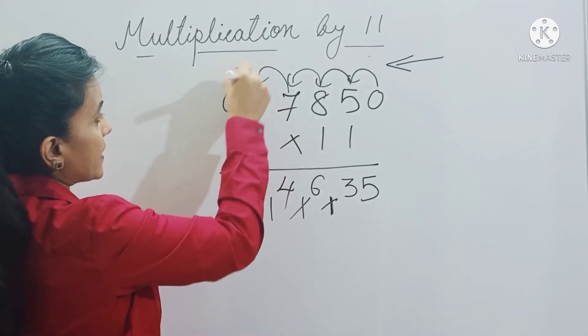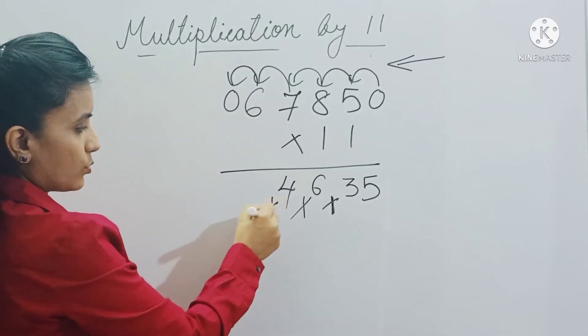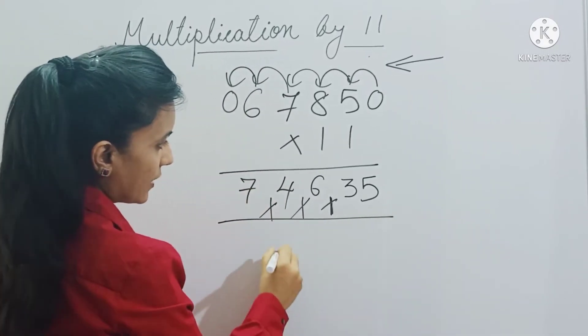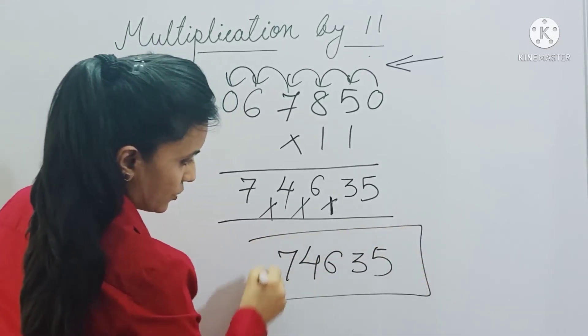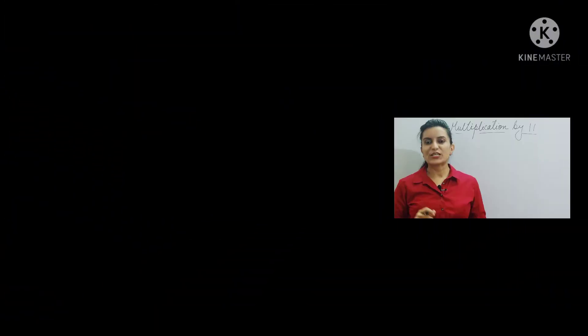And 6 plus 0 is 6, plus 1 is 7. So your answer is 74,635. This is your final answer.